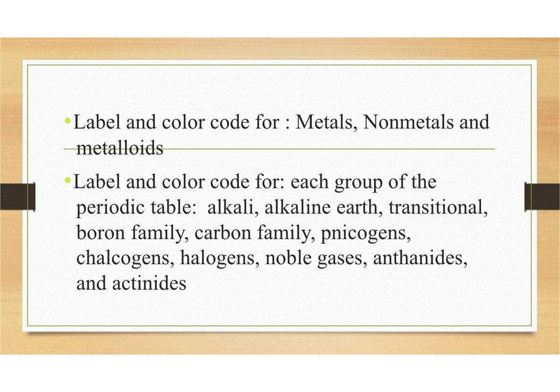We're going to label and color code for each of the groups on the periodic table: the alkali, the alkaline earth, the transitional, the boron family, carbon family, the nicogens, chalcogens, halogens, noble gases, the lanthanids, and the actinids.